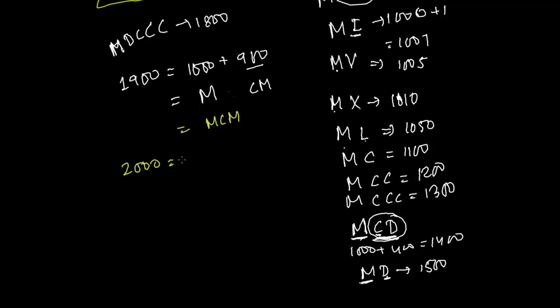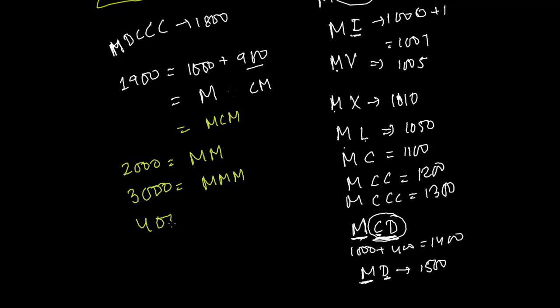For 2000 we write two M's together — MM. For 3000 we write three M's — MMM. Now the question is: how do we write 4000?